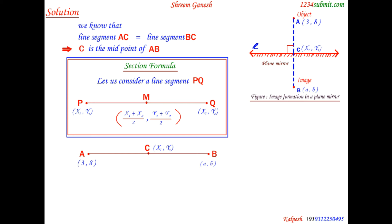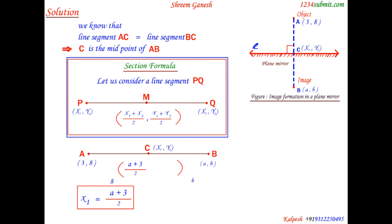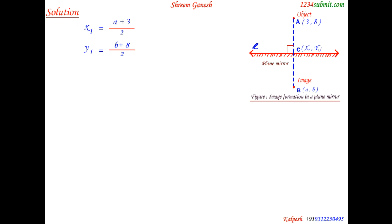Using the section formula in this question, we can say that x1 = (a + 3) / 2 and y1 = (b + 8) / 2. We will save these results as equation number 1 and equation number 2 respectively.